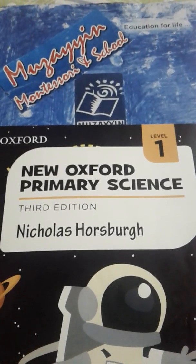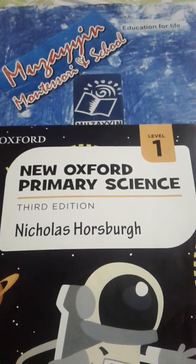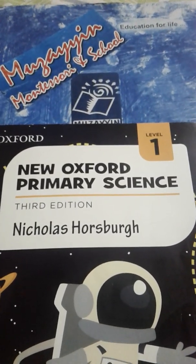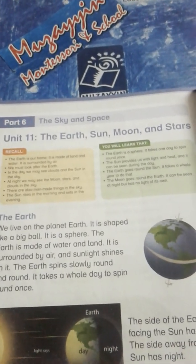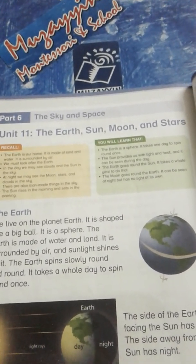Assalamu alaikum and welcome to our science online class. In today's science online class we will solve the exercises of unit number 11: The Earth, Sun, Moon and Stars. Kindly open page number 99 and mention the date and CW on the top.